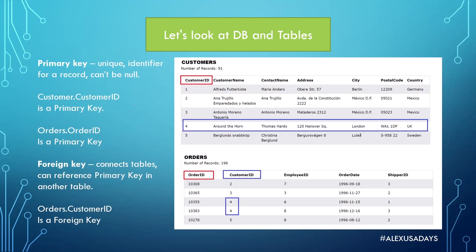So how does a database look? Here we have two tables coming from a database: a customers table and an orders table. You can see the customers table at the top and the orders table at the bottom. This is how it looks when you retrieve data from a table. In the customers table, there are multiple columns: customer ID, customer name, contact name, address, city, postal code, and so on. Those columns define what sort of data will be stored within them, and each row is a record of some information.